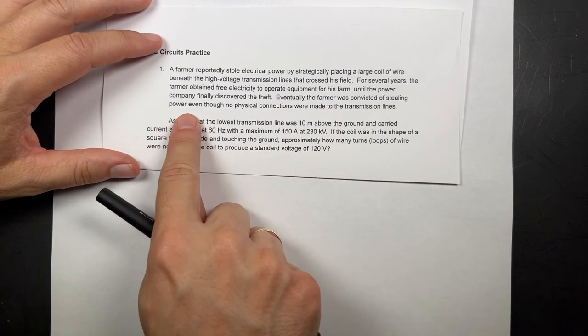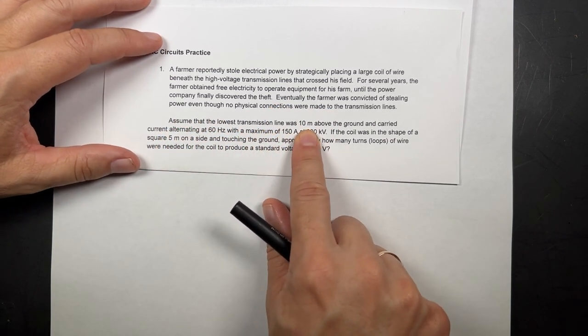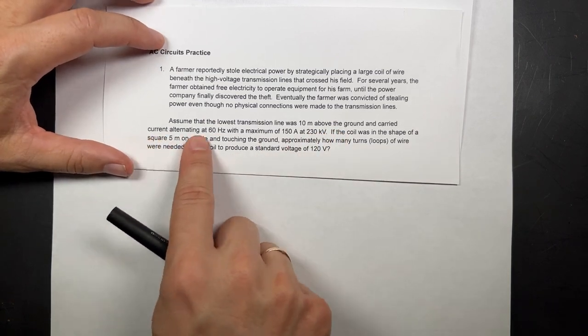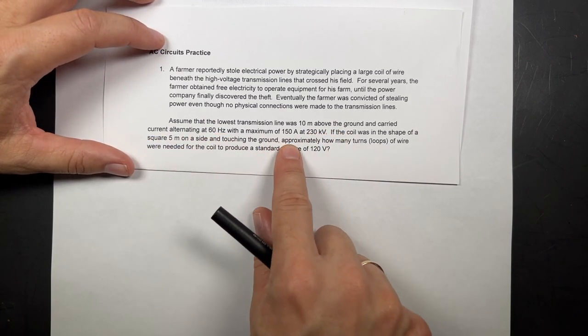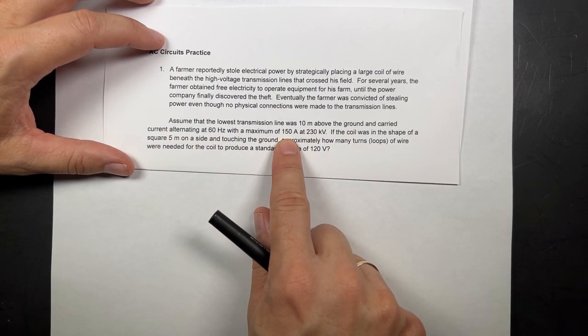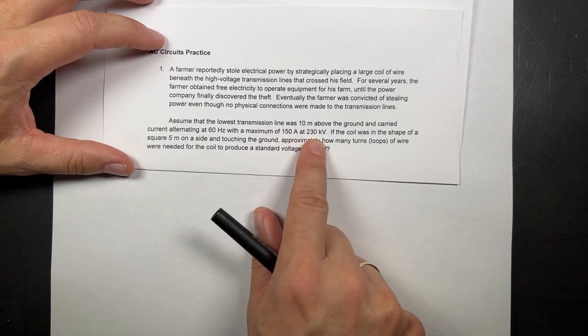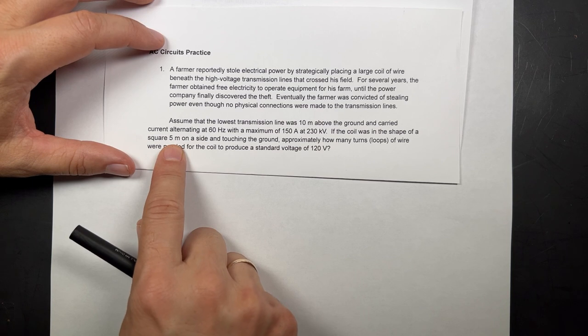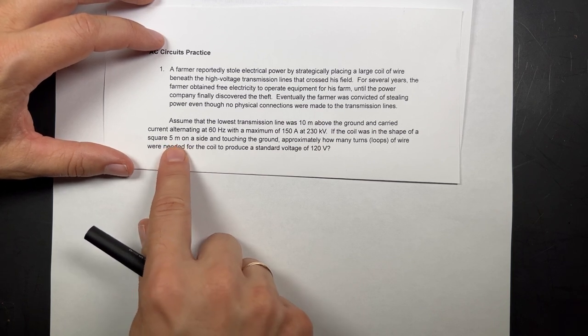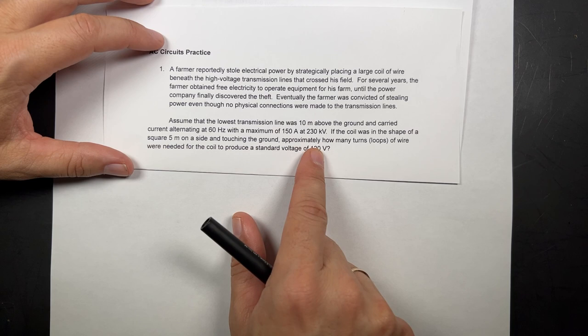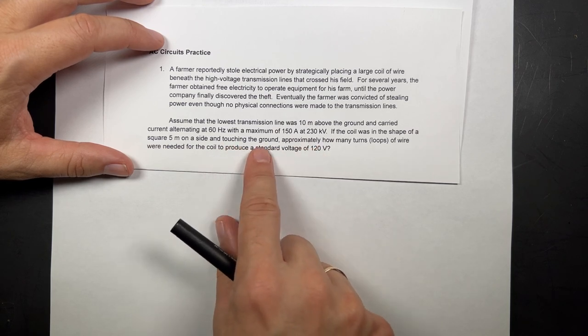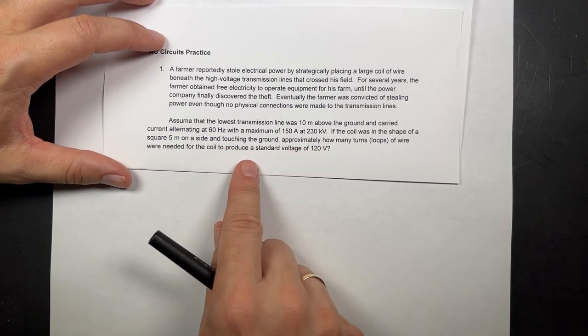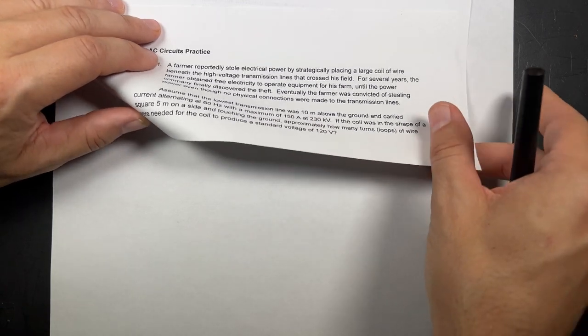Eventually they were convicted. Assuming the lowest transmission line was 10 meters above the ground and carried a current alternating 60 hertz with a maximum of 150 amps at 230 kilovolts. If the coil was in the shape of a square 5 meters on the side, that's kind of big, but whatever. Approximately how many turns of loops of wire needed to get 120 volts. Let's draw a picture.